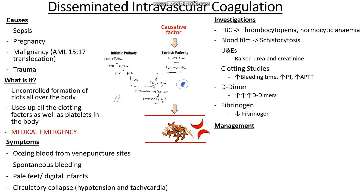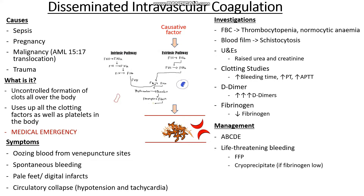So how may we treat someone with DIC? Because it is a medical emergency, we approach this with an ABCDE approach — airway, breathing, circulation, disability, and exposure. We then determine if the patient is having life-threatening bleeding. If they are losing a lot of blood, we have to replace the clotting factors lost. This could include fresh frozen plasma, which replenishes all the clotting factors, or cryoprecipitate if fibrinogen is very low, as cryoprecipitate contains a high concentration of fibrinogen as well as factor VIII and von Willebrand's factor.